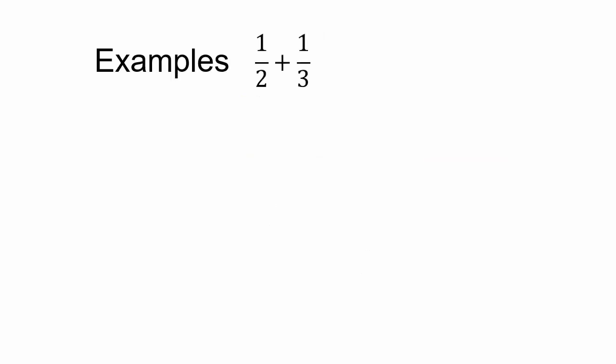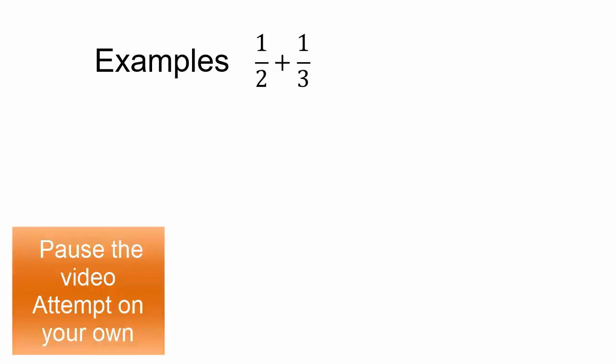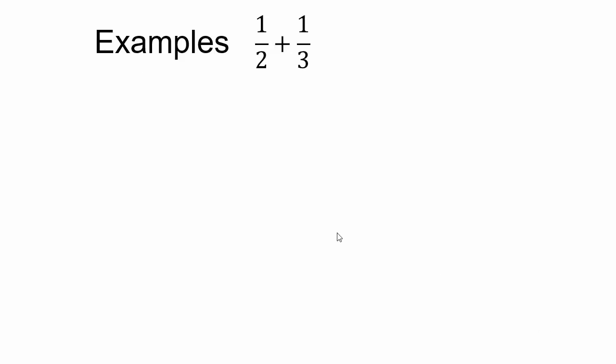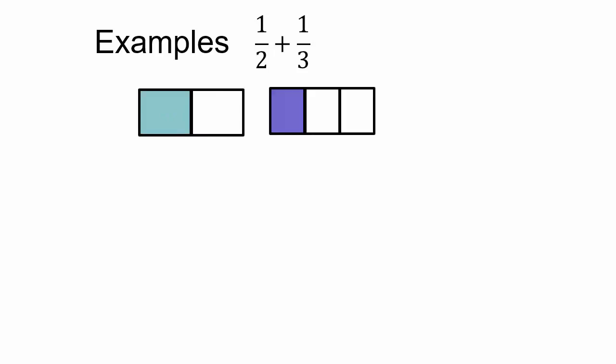Let's take a look at 1-half plus 1-third. Here I have one copy of a half and one copy of a third — they do not have the same unit. Pause the video and see what you could do visually, because if you can do it visually, you will understand the basic underlying principle. So 1-half visually is 1 piece out of 2, and 1-third is 1 out of 3 pieces. You can see they're not the same size — 1-half is more than 1-third.